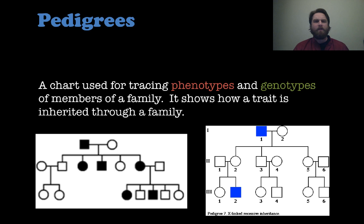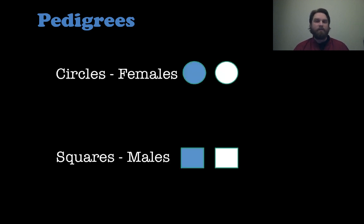Alright, so let's move on to pedigrees. So pedigrees are charts that are used for tracing phenotypes and genotypes of members of a family, and they kind of show how certain traits are inherited from one generation to the next. So there's a bunch of symbols, and some things are colored in, and some things are not colored in, and there's Roman numerals and numbers. So make sure you guys understand how to read this properly.